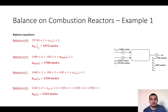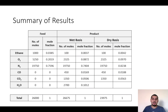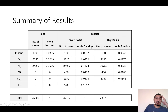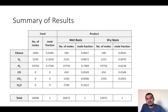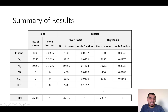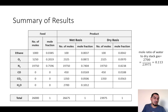The results from both methods match. We summarize the feed moles and mole fractions, and the product on wet and dry bases. The molar ratio of water to dry stack gas is 2700 divided by the sum of all dry-basis components, which equals approximately 0.113. This concludes the first problem; there is one more problem to solve next time.